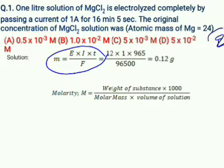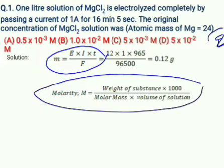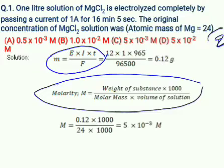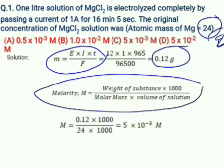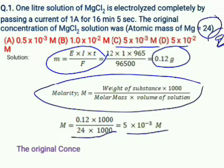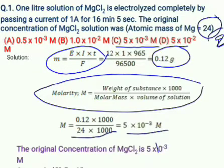We calculated the mass deposited as 0.12 g, but they want the original concentration of magnesium chloride. Using the molarity equation: M = (weight × 1000) / (molar mass × volume) = (0.12 × 1000) / (24 × 1000) = 5 × 10⁻³ mol/L. The correct option is C: 5 × 10⁻³ M.